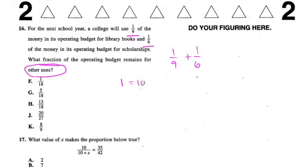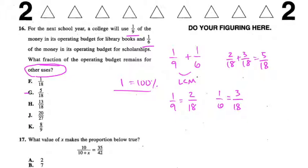To add these, we have to get the lowest common multiple, which in this case would be 18. So one-ninth is really two-eighteenths and one-sixth is three-eighteenths. If we add those two together, we get five-eighteenths. Notice this is not our answer; we still have to subtract it from one. One is 18 over 18 minus five-eighteenths is 13/18. This is our answer, H.